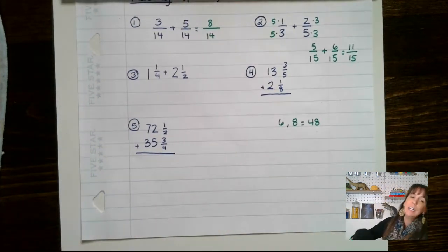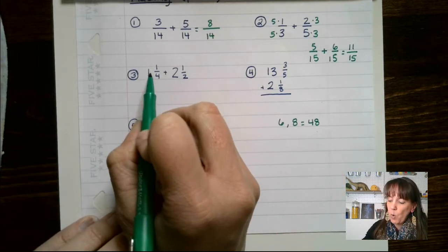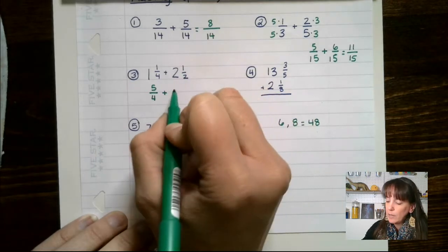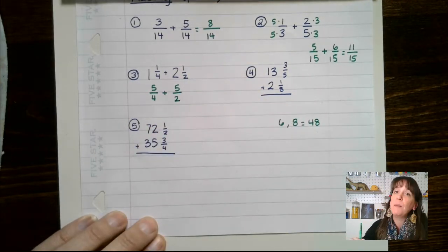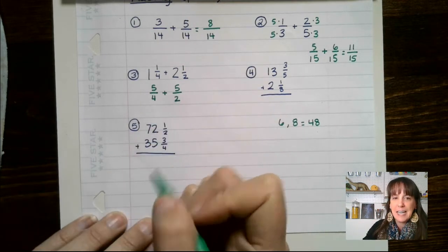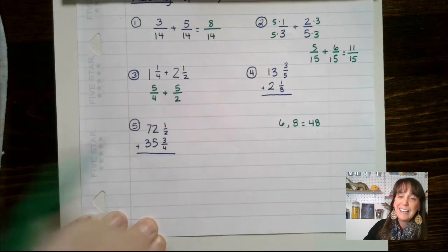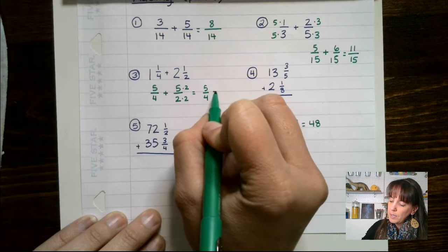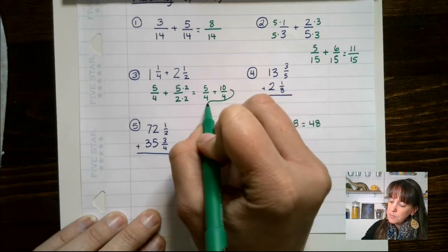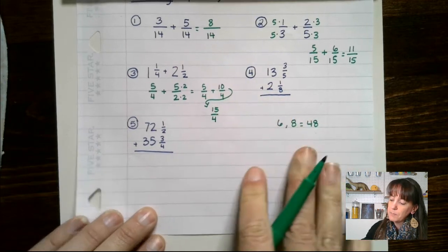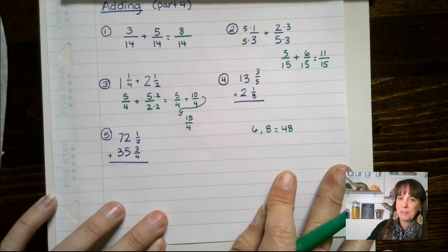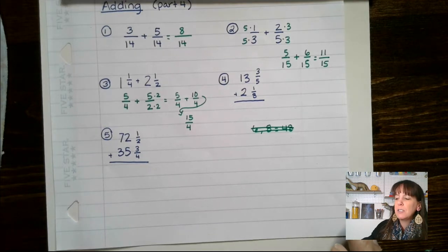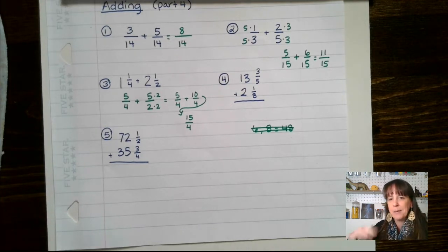When adding mixed numbers, you can convert to improper fractions. For example: 4 times 1 is 4 plus 1 is 5, giving 5 over 4. And 2 times 2 is 4 plus 1 more is 5, giving 5 over 2. We still need a common denominator — in this case it's 4, not 8. Multiply 5 over 2 by 2 to get 10 over 4. So 5 over 4 plus 10 over 4 gives 15 over 4. You can leave that as an improper fraction — in algebra you'll often use improper fractions unless you need to graph something.